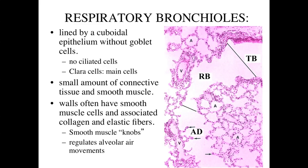As we get down beyond the level of the terminal bronchioles — labeled TB on this slide — we have a lot of structure to the wall. As we get into the exchange portion, we're looking at a much thinner epithelial lining, because we want very rapid diffusion of gaseous materials between the air space and the blood space. The respiratory bronchioles are lined by a cuboidal epithelium — no goblet cells, normally no ciliated cells. These cuboidal epithelial cells are clara cells, producing proteoglycans and glycosaminoglycans to coat and protect the lining and reduce surface tension.